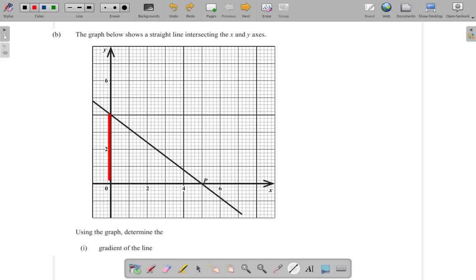the rise over run. This is our rise. How many units does it rise? 1, 2, 3, 4. So, we have a rise of 4.